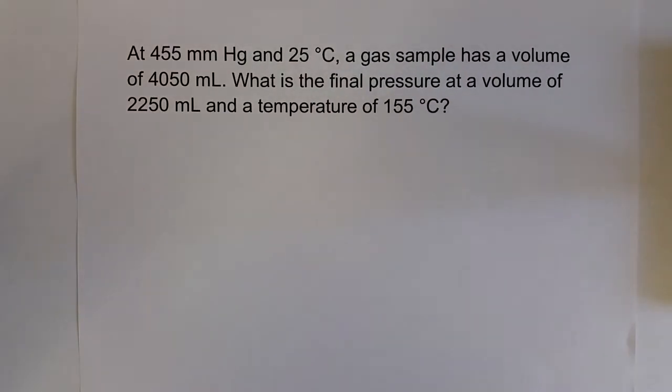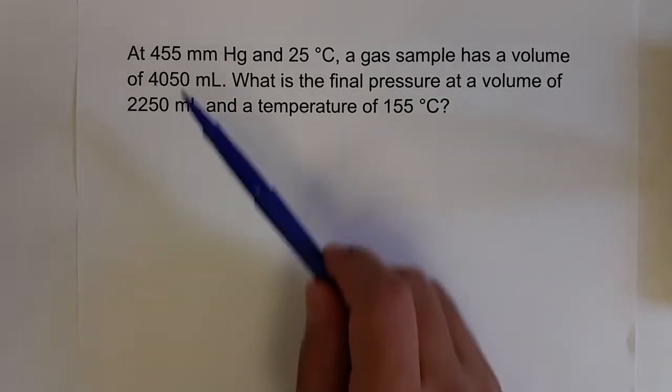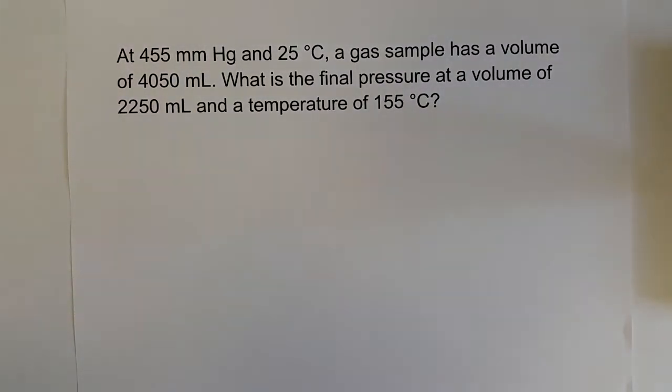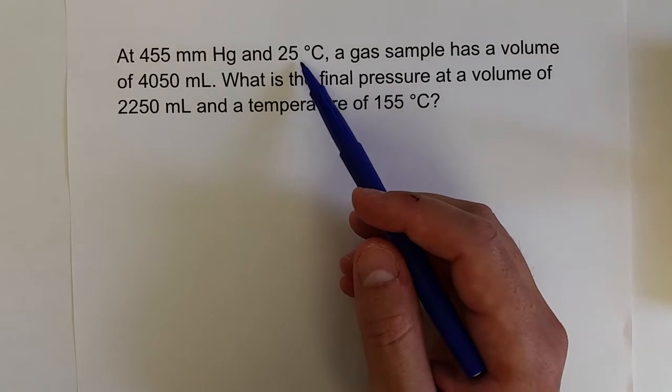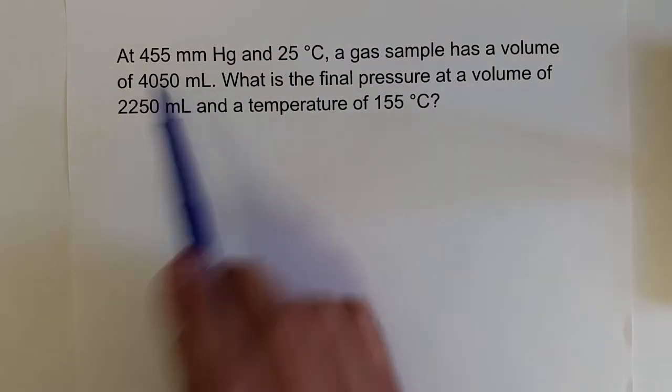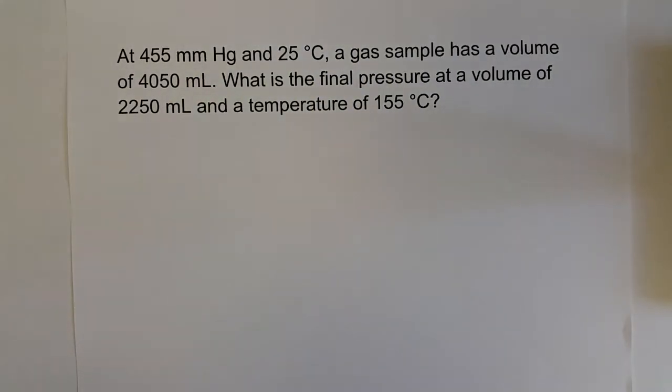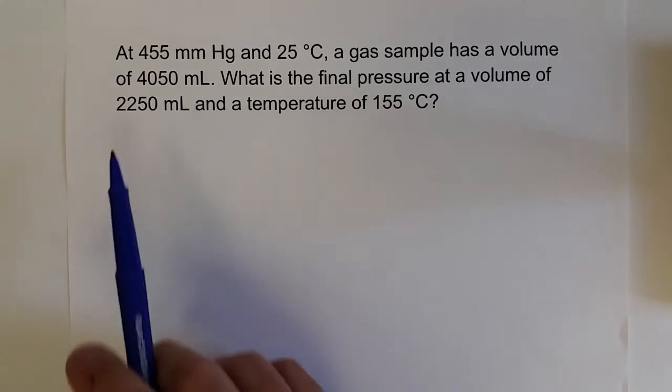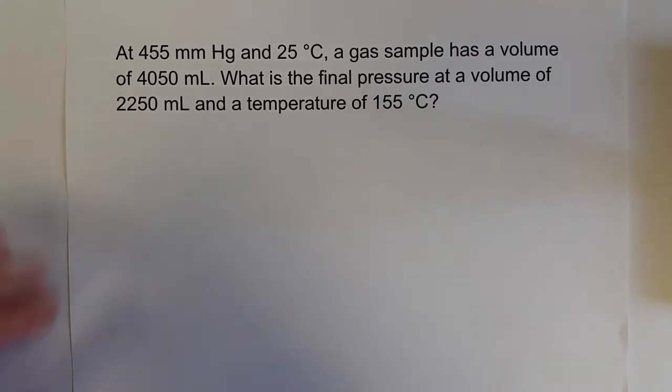So let's say we have a gas sample that has a pressure of 455 millimeters mercury at 25 degrees Celsius and a volume of 4,050 milliliters. What's the final pressure at that volume and that temperature?